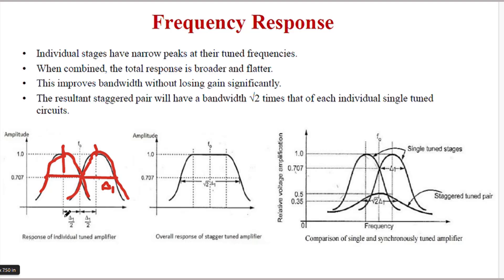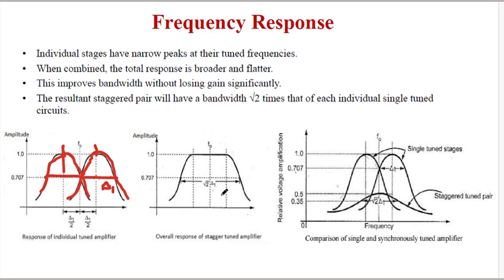The separation between these two is: from this to the center is Delta 1 by 2, and from the center to the other is Delta 1 by 2 — so overall it is Delta 1. This is the response of each individual tuned amplifier. For the overall stagger tuned amplifier, the bandwidth is root 2 times the bandwidth of each individual stage, so the bandwidth gets increased.